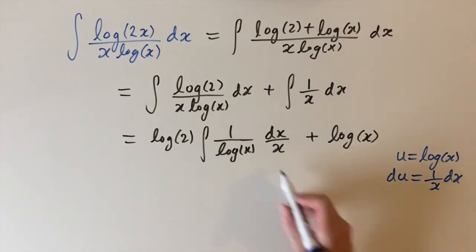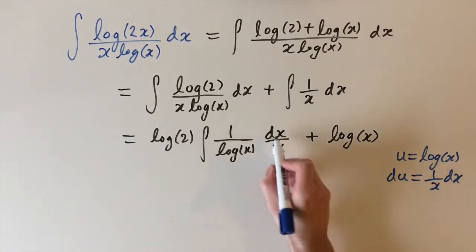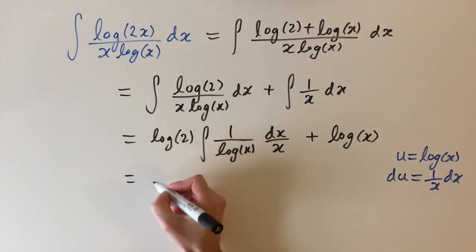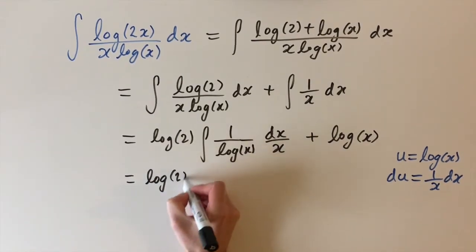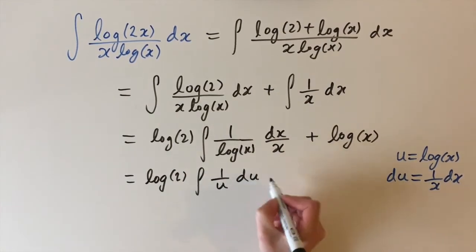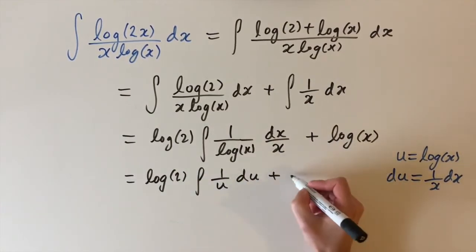And then we can just replace the dx over x term by du. And also log of x becomes u. So if we do this, we're going to have log of 2 times the integral of 1 over u du, which is nice and simple, plus log of x over here.